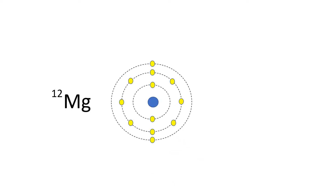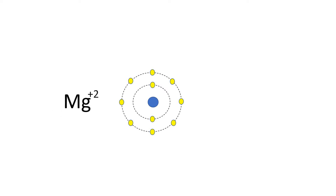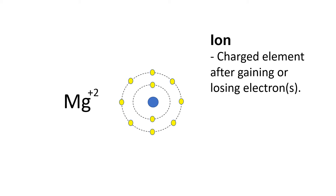These are the electrons that magnesium will give up. The magnesium will donate or lose the two electrons at the outermost energy level. When its outermost energy level loses electrons, they become empty and disappear. What we will have now is a magnesium with two energy levels and eight electrons at the outermost energy level. So after magnesium loses two electrons, it becomes positively charged — specifically plus two — because it donates two electrons. An ion is a charged element after gaining or losing electrons. In the case of magnesium, it is now called a cation.